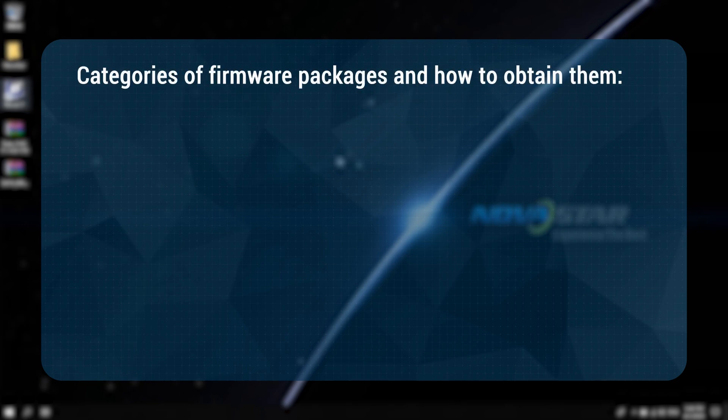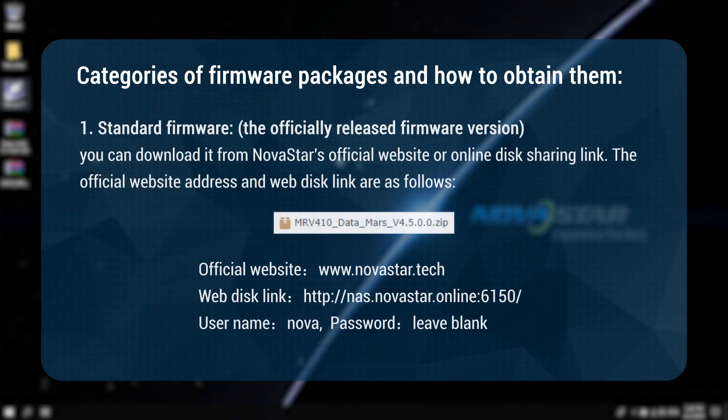Categories of firmware packages and how to obtain them. First, standard firmware: the officially released firmware version. You can download it from Novastar's official website or online disk sharing link. The official website address and web disk link are as follows.